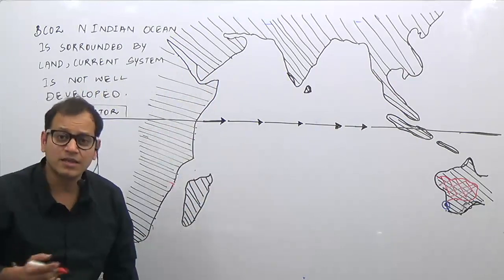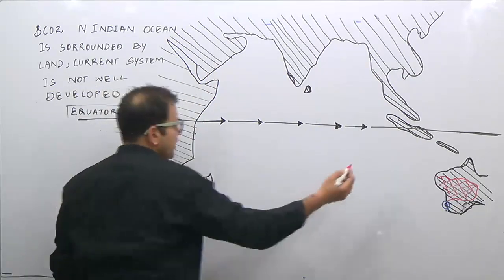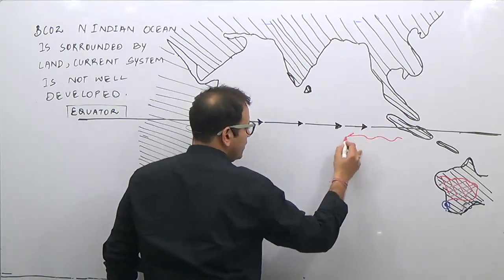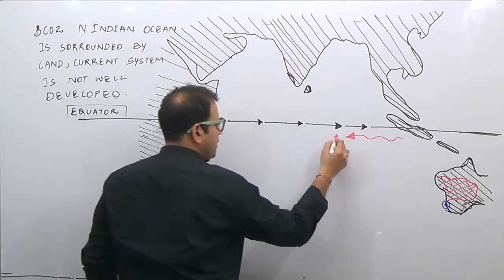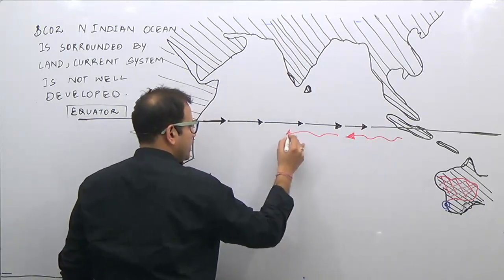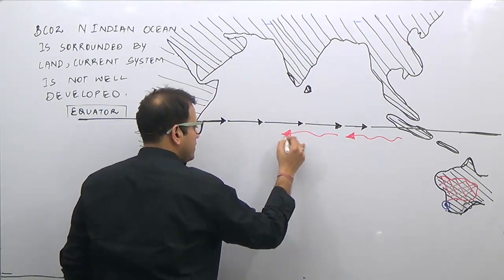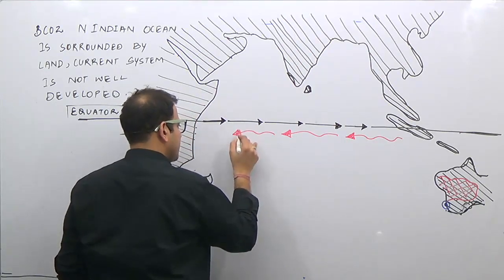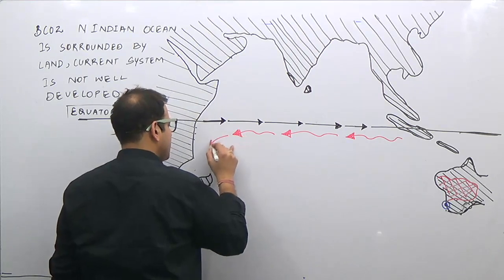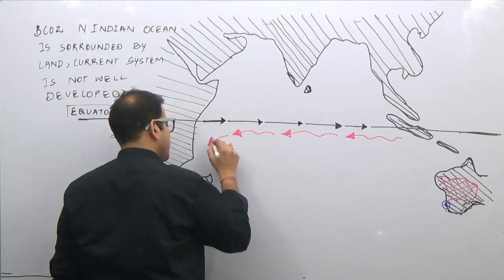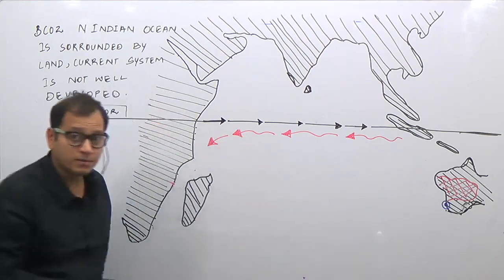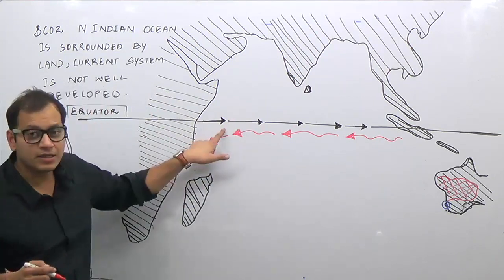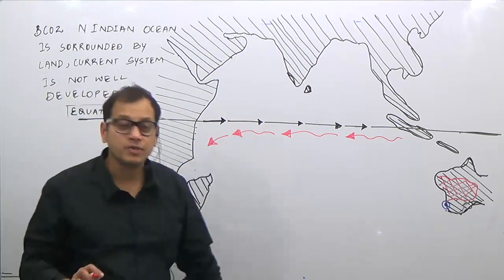Because the northern hemisphere current system is not well-developed, let us study the currents of the southern Indian Ocean. In the southern Indian Ocean there is a South Equatorial Current, which is a properly well-developed current system. The South Equatorial Current is generated due to the rotation of the Earth and the winds. There is also an equatorial counter current — these are warm currents.